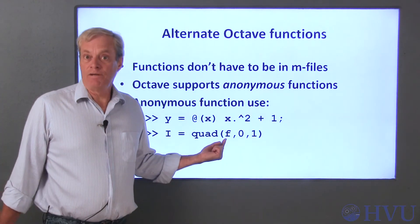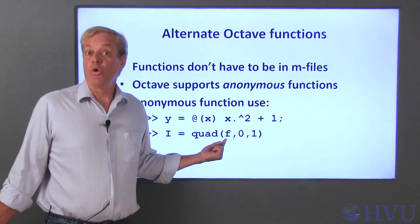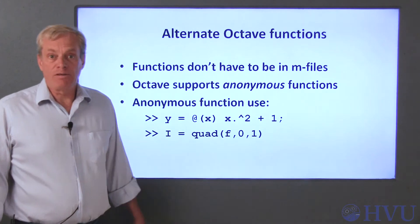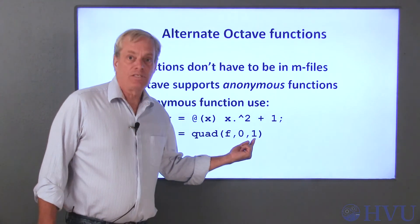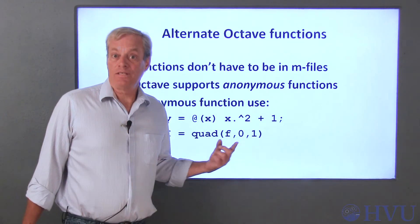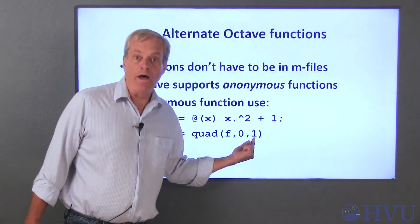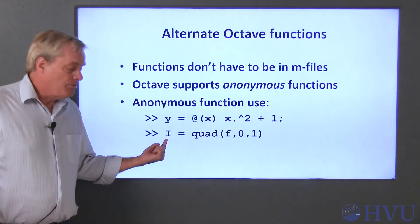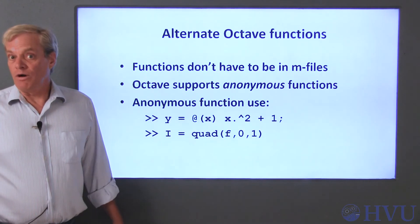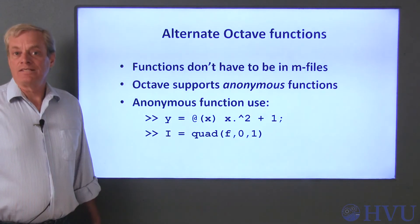The name of the function still appears first in the argument list, but no quotes are necessary. As before, the lower and upper limits of integration appear next, so in this example, I'm integrating the function between the x values of zero and one. The value of the integral, i, is returned as before. Now let's do a demo of this example syntax.